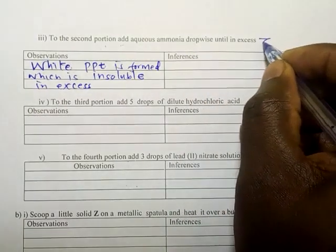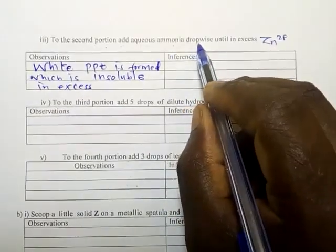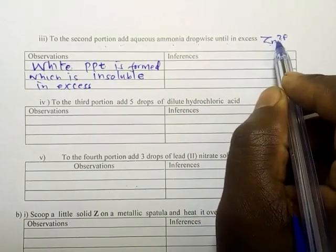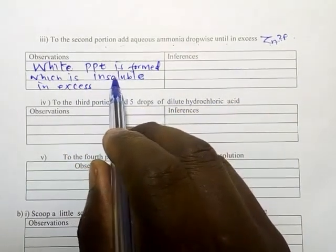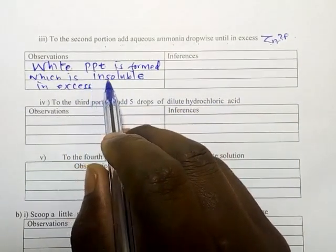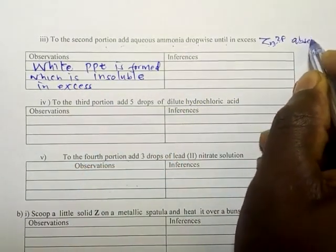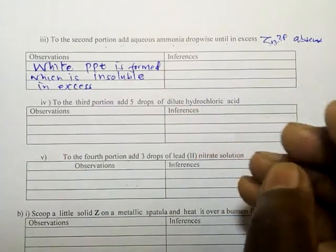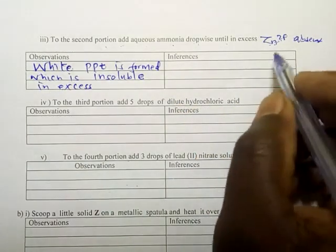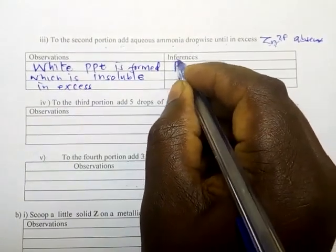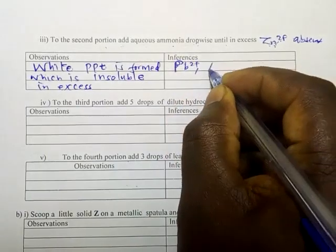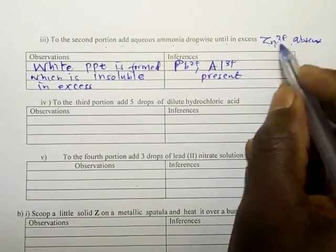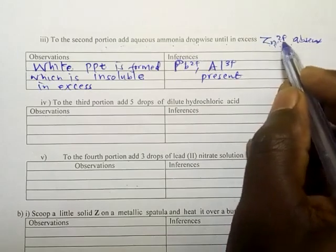Remember zinc ions, when we add ammonia dropwise and in excess, if zinc ions is present, the white precipitate will dissolve to form a colorless solution. But now this one is not forming a colorless solution. The white precipitate persists. Therefore it means that zinc two ions is absent. If zinc is absent, what would be present? We had three of them: aluminum, zinc, and lead. Therefore zinc is not there, it means that lead and aluminum are present.